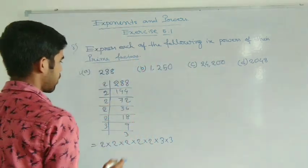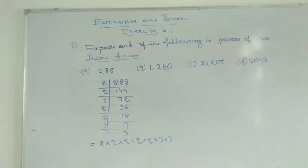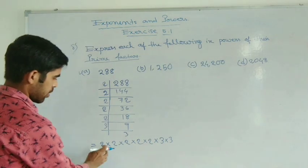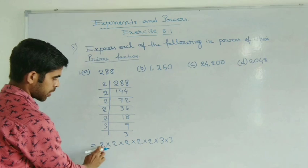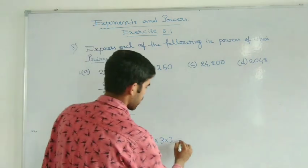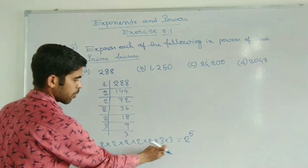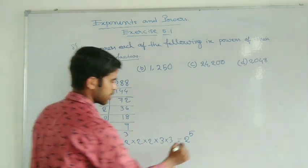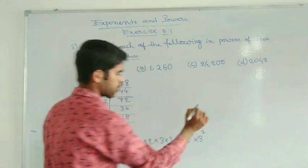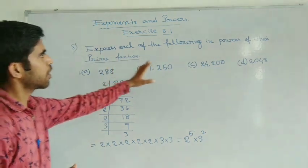So here express in the following powers of the prime numbers. How many 2s are there? 1, 2, 3, 4, 5 — so you write 2 to the power 5. And then how many 3s are there? 2 — so write 3 to the power 2. This is the prime factorization expressed in powers.